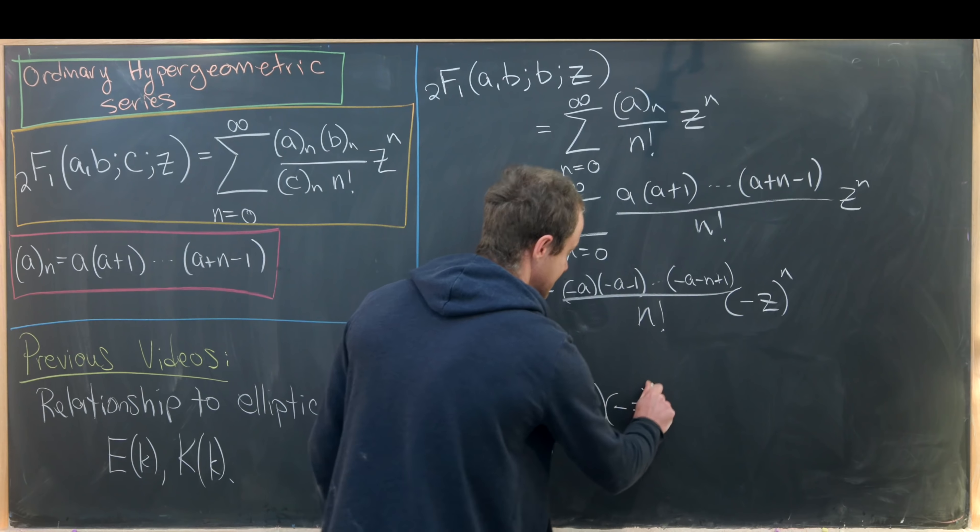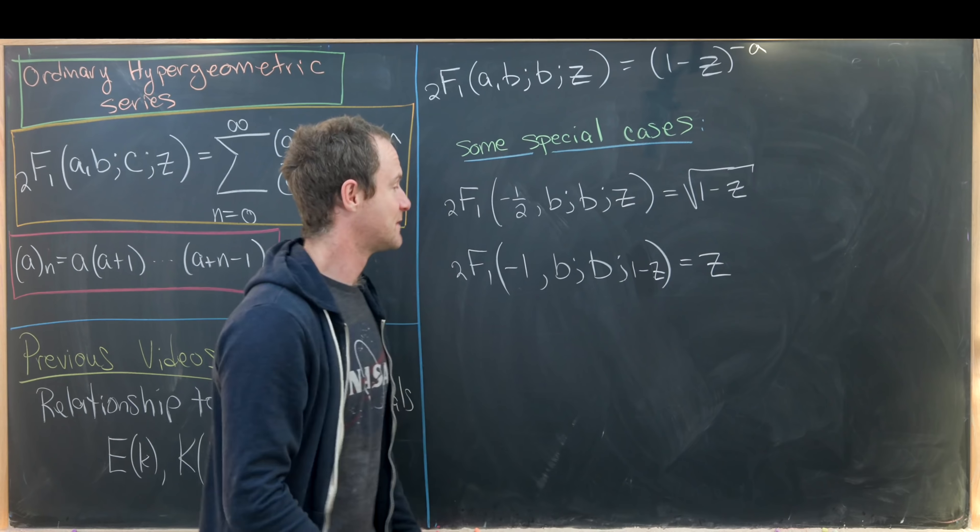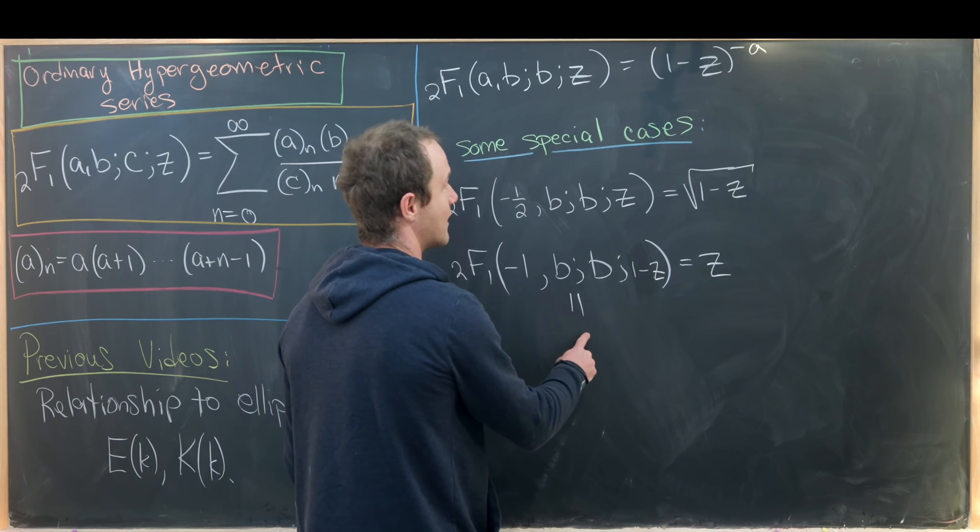So 2F1(a, b; b; z) = (1-z)^(-a). Some even more special cases can be gotten by choosing values of a. If we choose a = -1/2, we get a minus-half power negated, giving a half power — in other words, the square root of (1-z). If we choose a = -1, then negating gives +1, and composing with (1-z) gives z, since (1-(1-z))^1 = z.